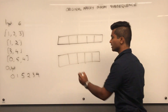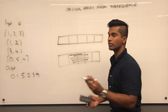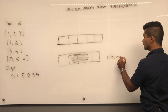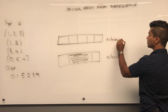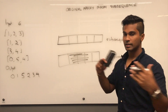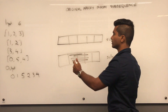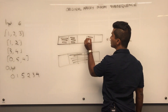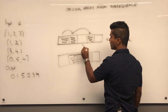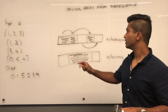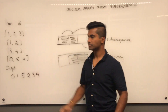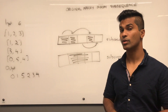A subarray is a consecutive slice of an array. A subsequence is not only consecutive elements but can also skip and jump around — so both of these examples would be valid subsequences. Essentially they're giving us these subsequences as inputs and they want us to return the original array.